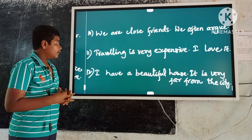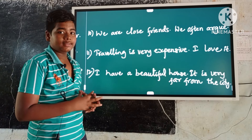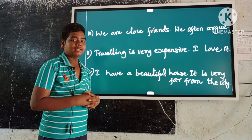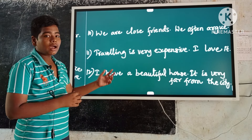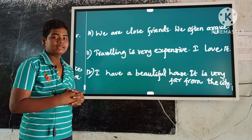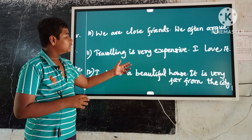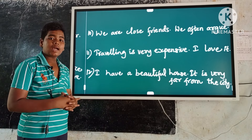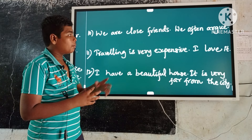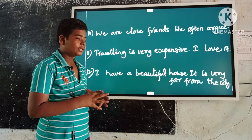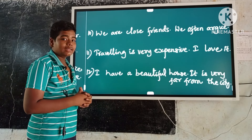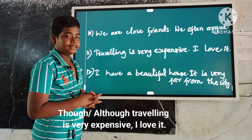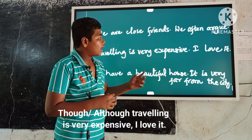Example number eleven: Traveling is very expensive. I love it. These are contrast ideas. Here the first occurring sentence is 'traveling is very expensive.' Keep though or although before it, and a comma before the second sentence. So the answer is: Though or although traveling is very expensive, I love it.